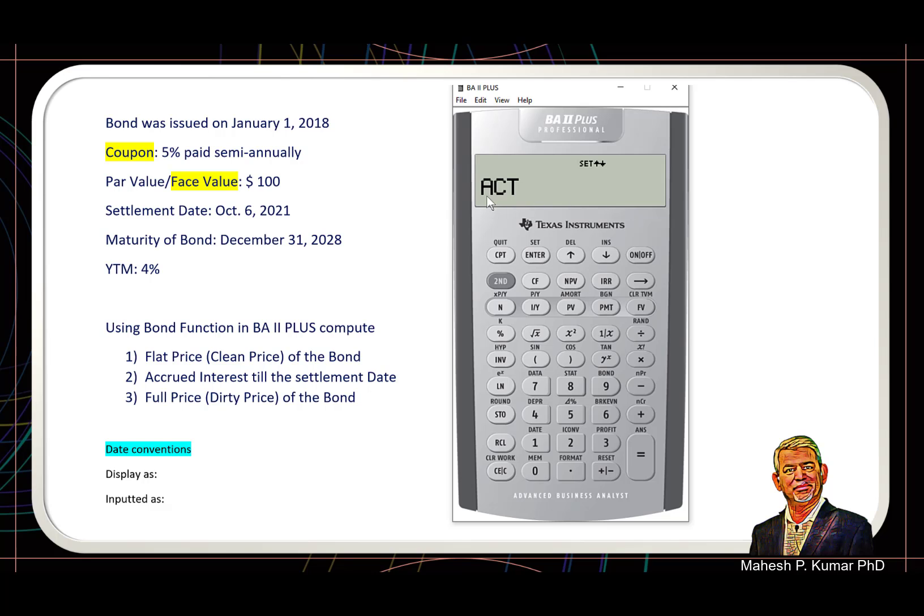So by default the calculator is using ACT, actual date convention. But if in some case—and in this question we are using actual date convention—but if in some case you have to use 30 by 360 date convention, then you will go to second and you will click set. So this is 360 date convention. But we are not using that, so we will go back, second and set. We are back into actual by actual date convention.